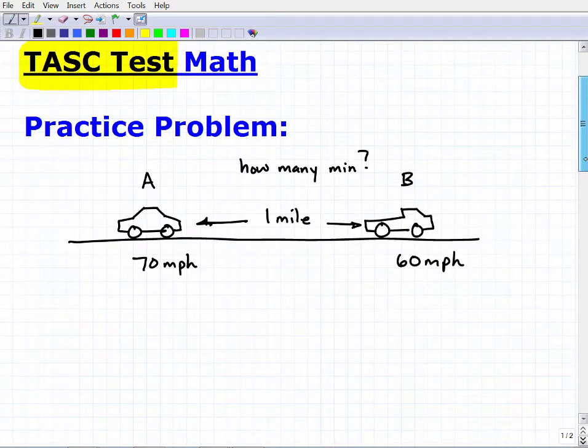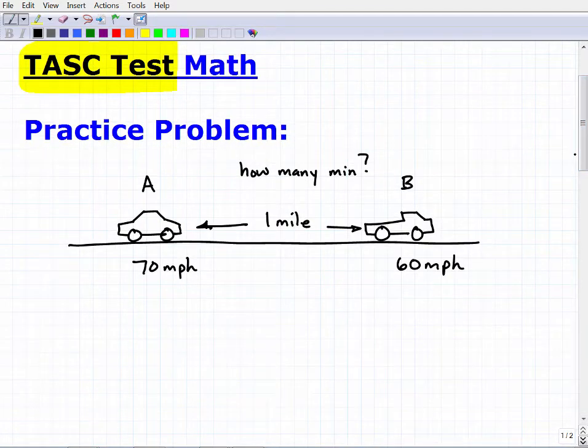There's a couple different ways you can reason through this, but I'm going to read you the problem, then you should see if you can figure it out, and then of course I'm going to solve it. So here we have two cars. Let's call this car A and let's call this car B. You can see here car A is trailing behind car B. It's going 70 miles per hour, and car B is going 60 miles per hour. And right now, car A is one mile behind car B. So what I want to know is how many minutes will it take for car A to catch up to car B?